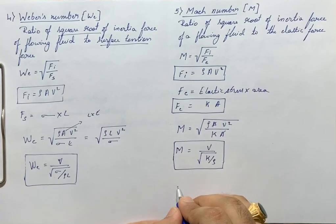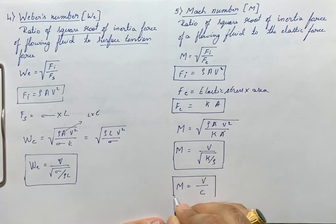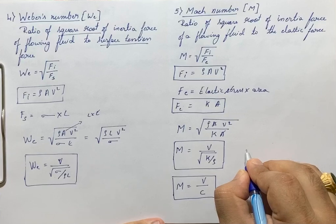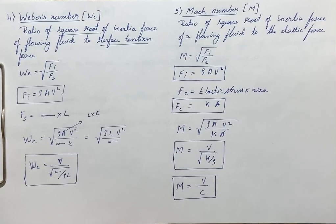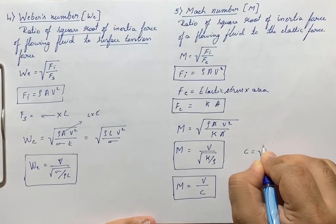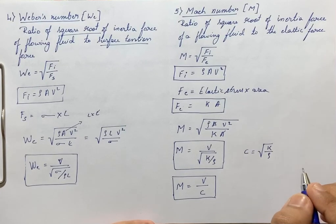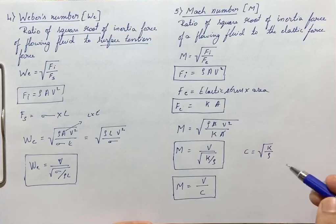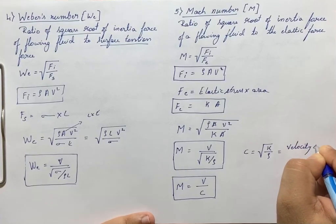Mach number M equals V divided by C, where V is the velocity of the fluid or projectile and C equals square root of K divided by rho, which is the velocity of sound in the fluid. K is the elastic stress divided by density of the fluid.